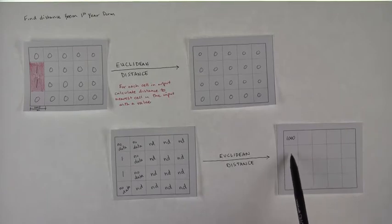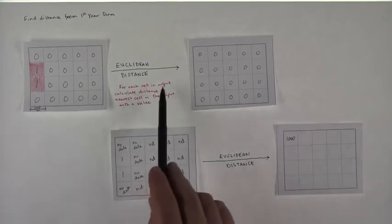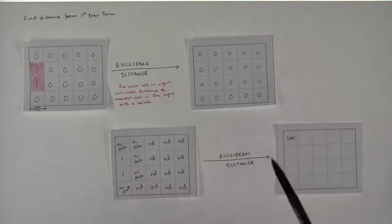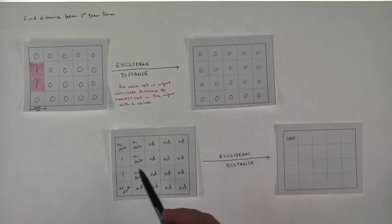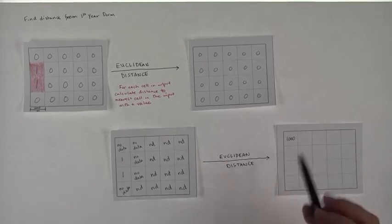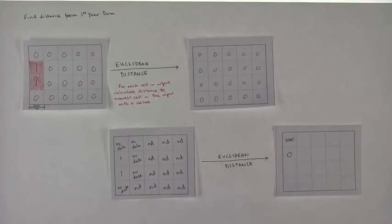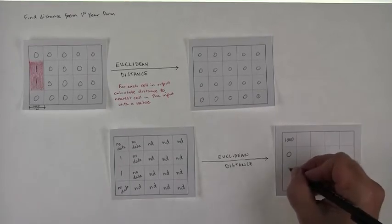Now here's the fun part. What do you think goes in here? So the distance to the nearest cell in the input with a value, well, what's the nearest cell with a value from this cell? It is that cell, right? And so that's going to get a zero, because this cell is zero distance from the dorm, right? This cell will also get a zero.